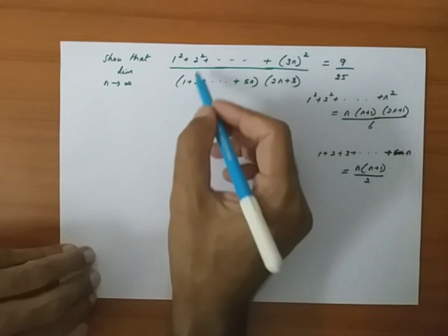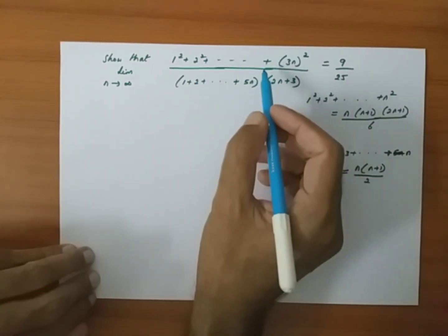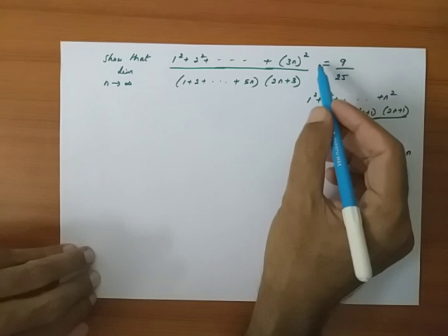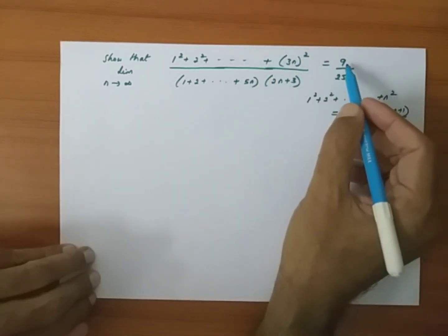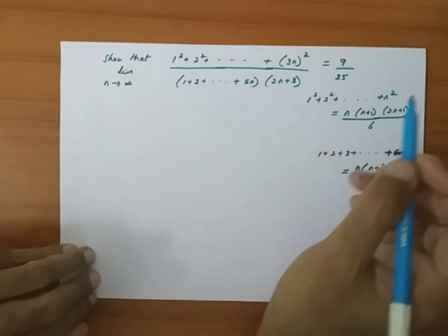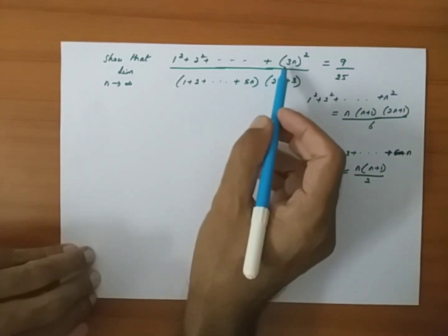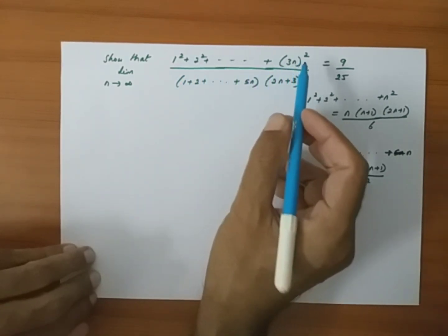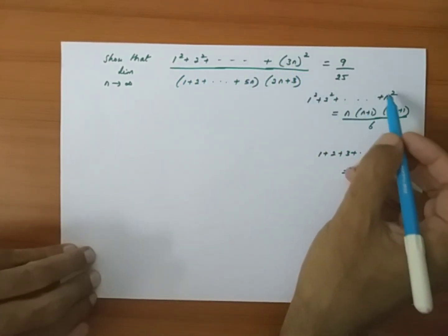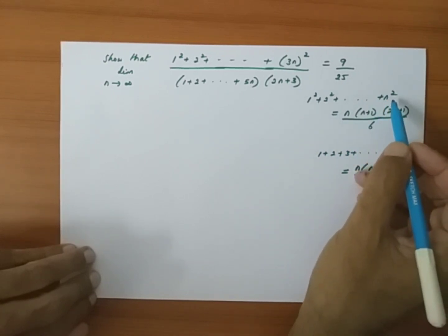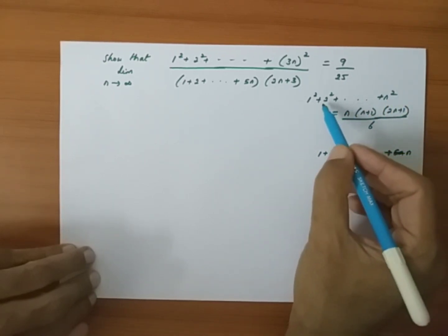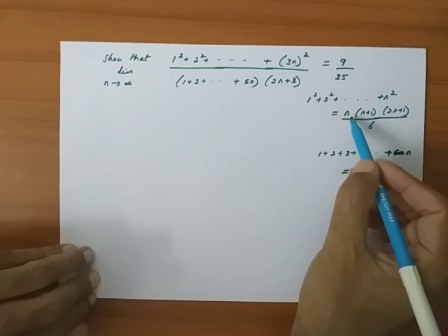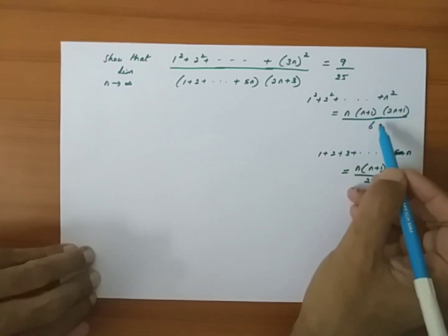We have to show that for this given function, as the limit n approaches infinity, the value is equal to 9 by 25. Let us see the numerator part: 1 squared plus 2 squared plus up to 3n squared. We know the sum of squares of n natural numbers formula is n(n+1)(2n+1) by 6.